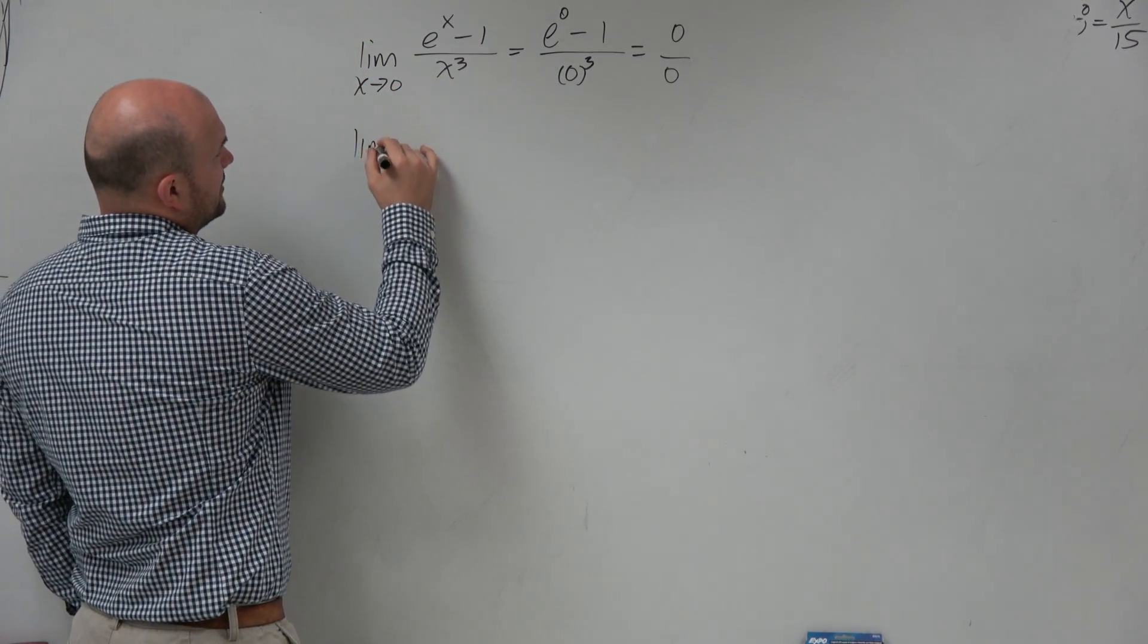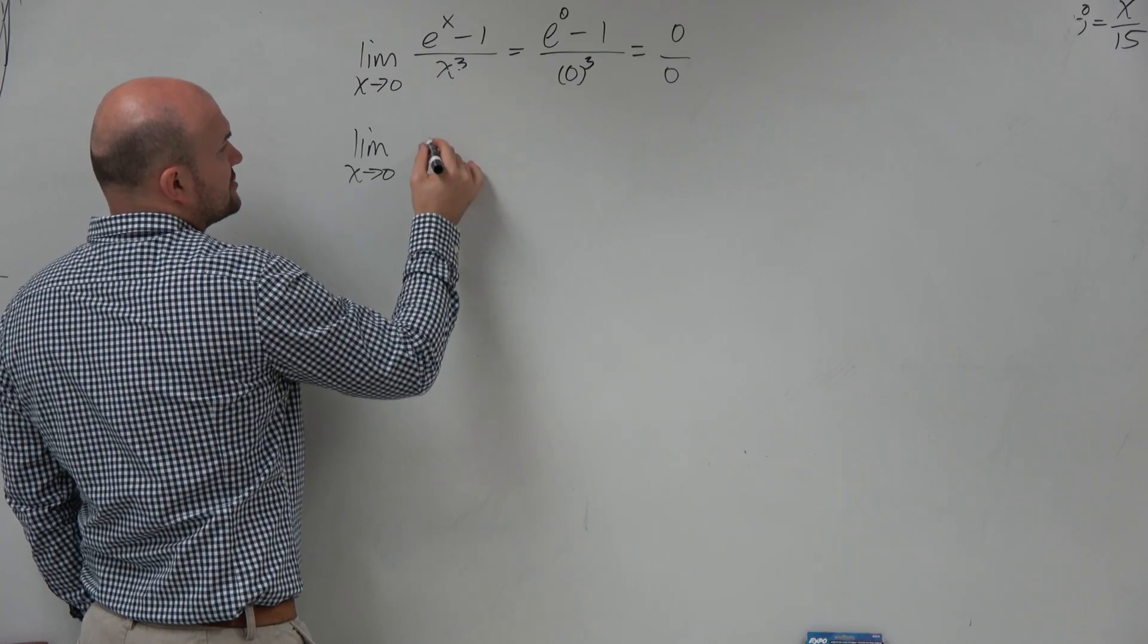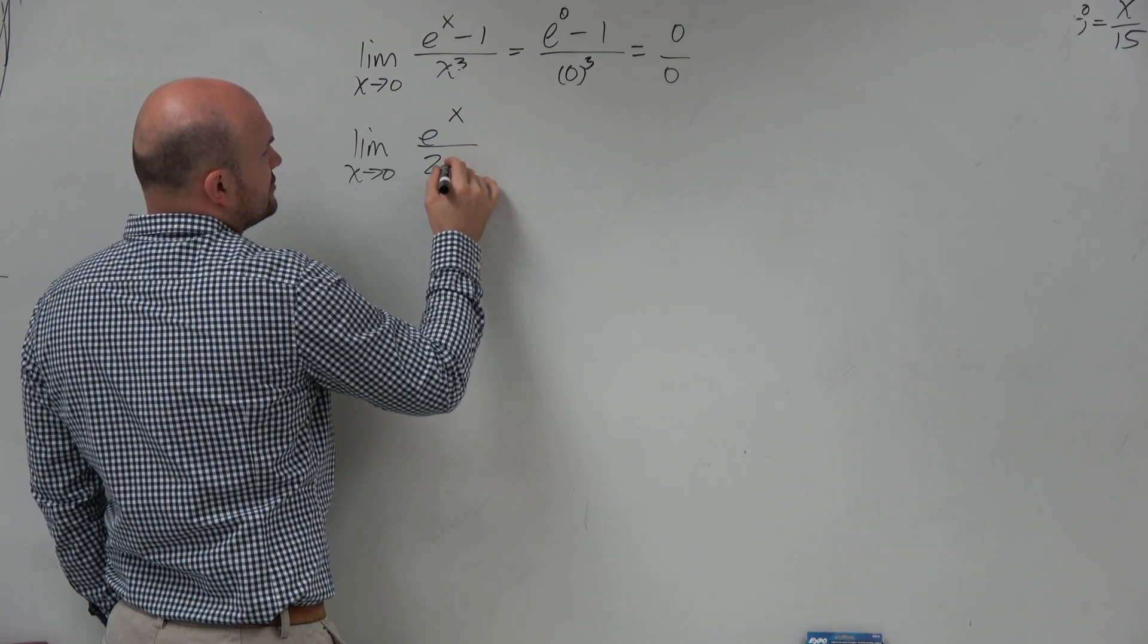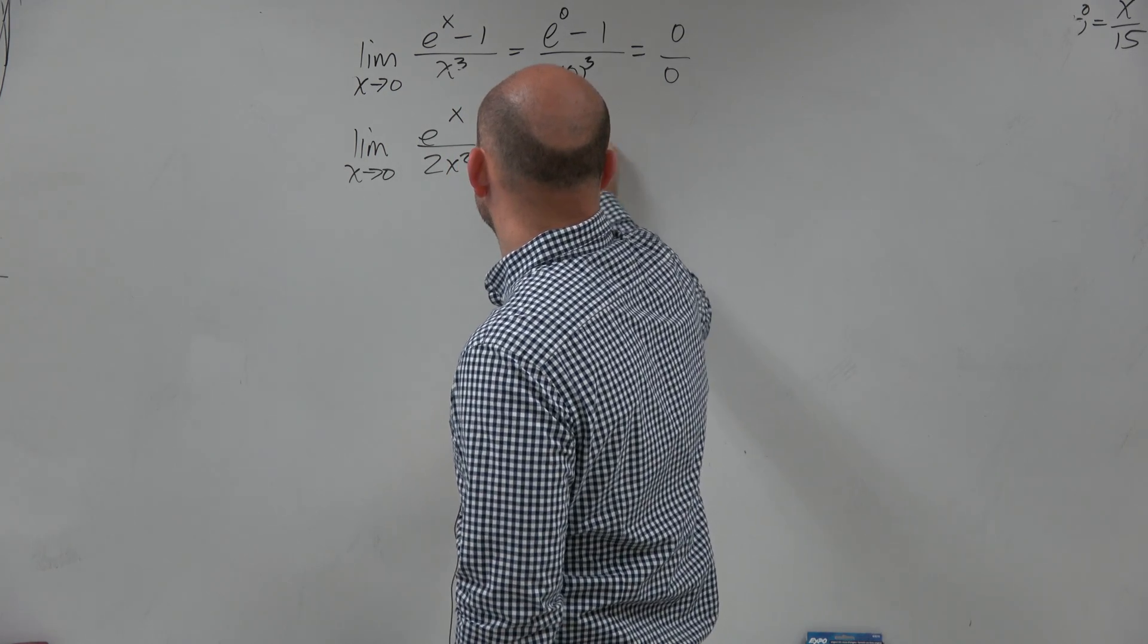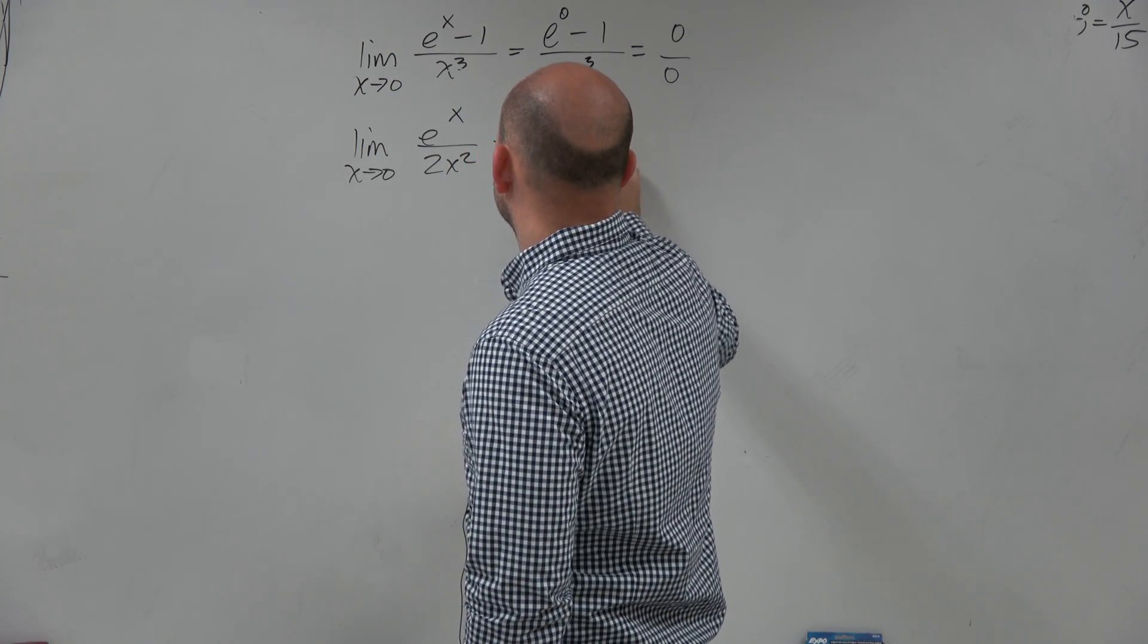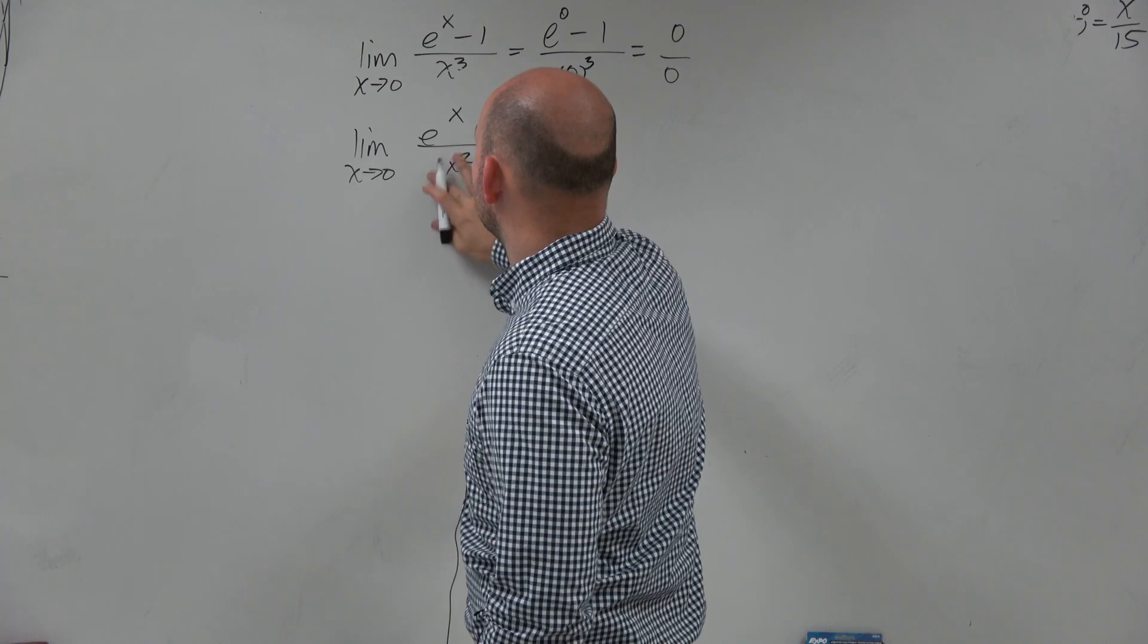So therefore, the limit as x approaches 0 is just going to be e to the x over 2x squared. Now, as I apply direct substitution, I get e to the 0 over 2, 3x squared,